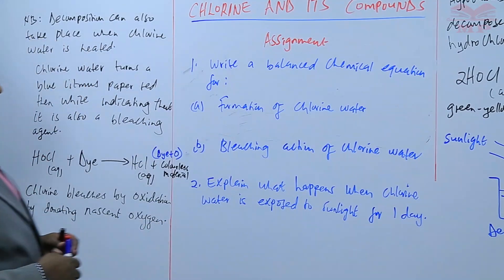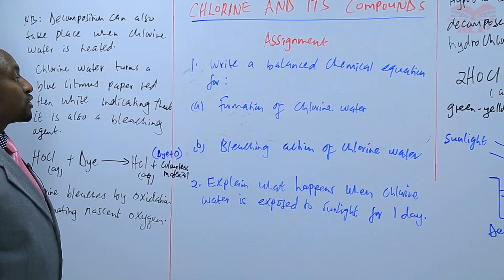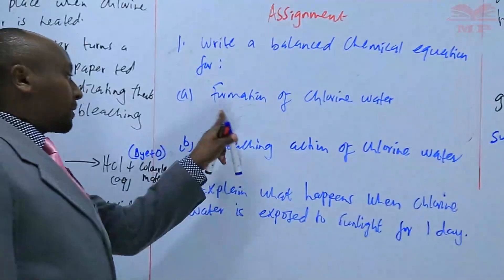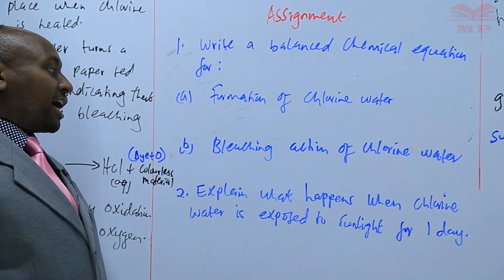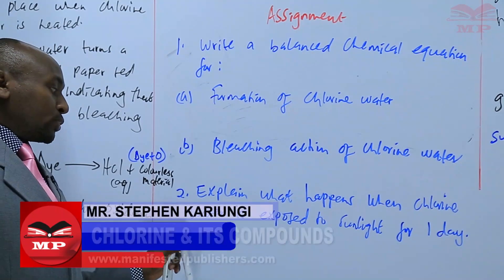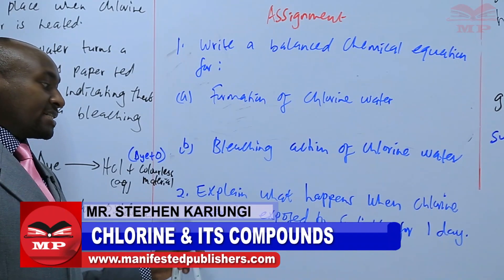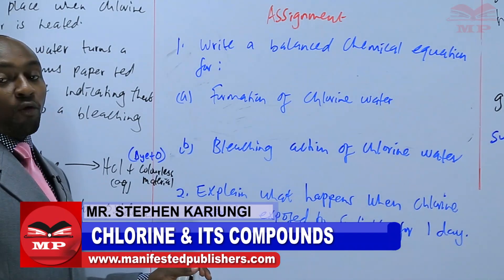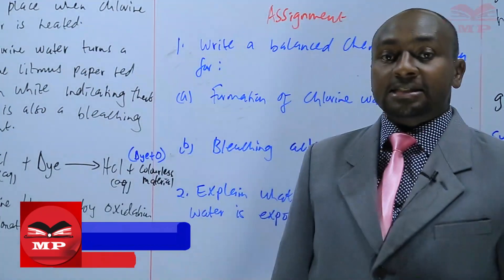Assignment: Question one — write a balanced chemical equation for (A) the formation of chlorine water and (B) the bleaching action of chlorine water. Question two — explain what happens when chlorine water is exposed to sunlight for one day. We will stop there until next time. Goodbye.